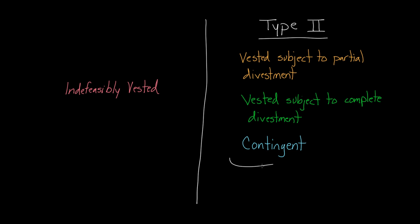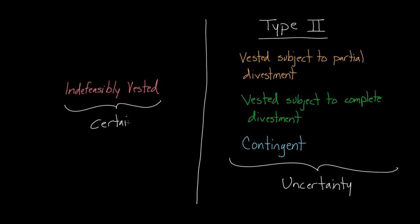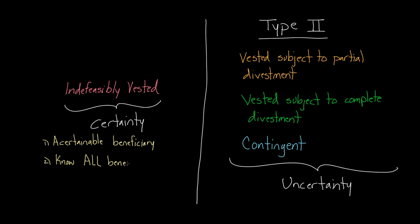I've grouped those three together because type two remainders contain uncertainty, whereas indefeasibly vested remainders contain certainty — meaning we know to whom an interest is going and that nothing can take that interest away. Indefeasibly vested remainders require: first, at least one ascertainable beneficiary; second, that we know who all the beneficiaries are; and third, that there be no unsatisfied condition precedent.